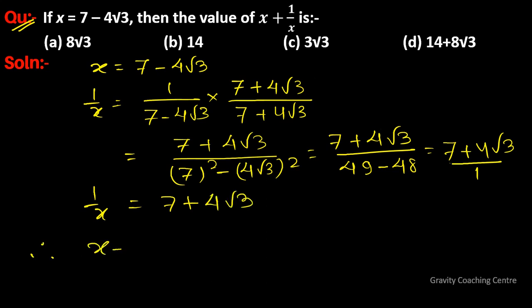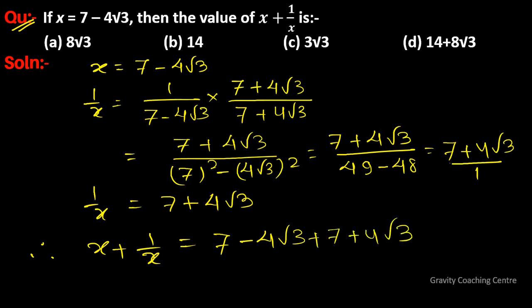Therefore, x plus 1 upon x equals 7 minus 4 root 3 plus 7 plus 4 root 3. The 4 root 3 terms cancel, giving the answer 14. So option B is the correct answer.